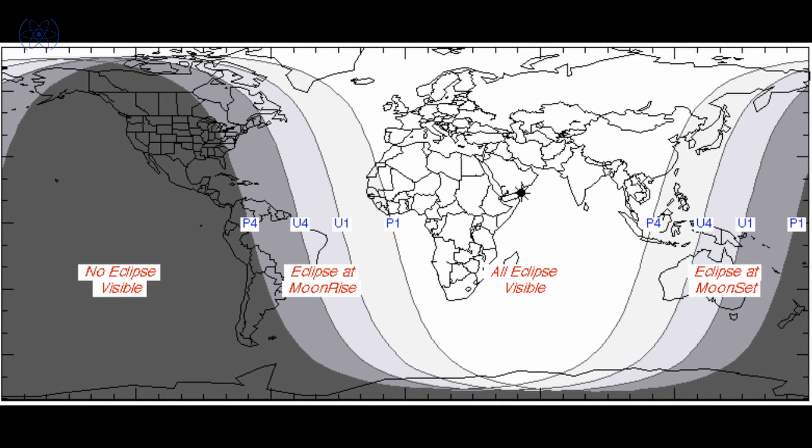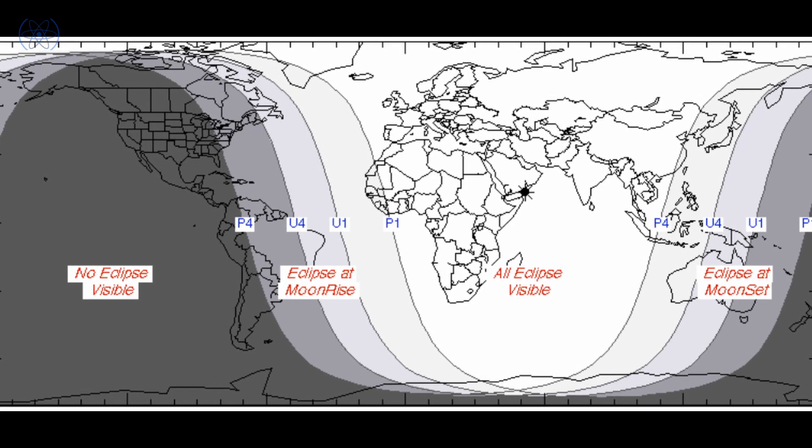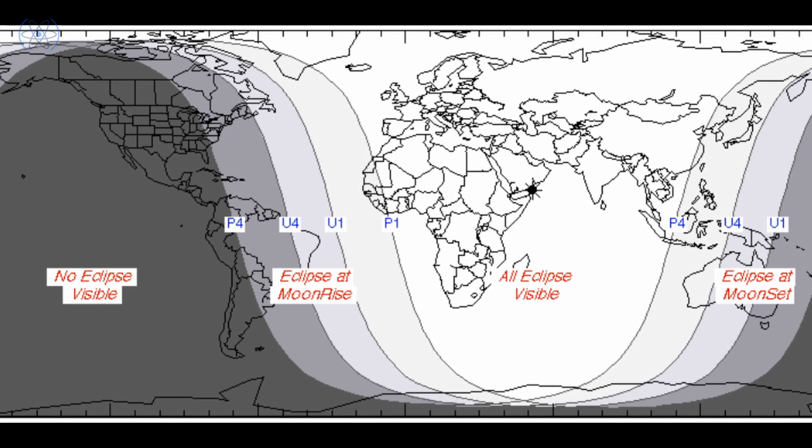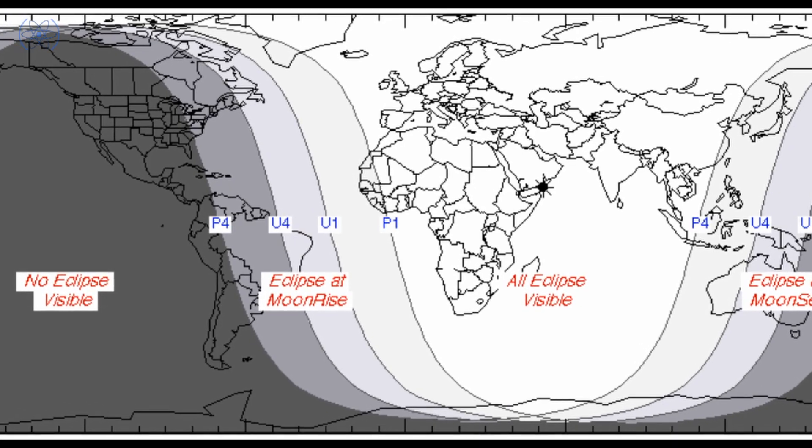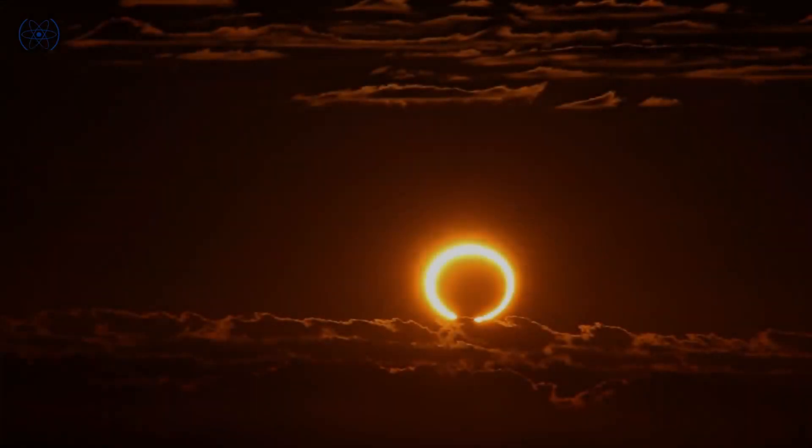The eclipse may be visible in Europe, Asia, Africa, Western Australia, and the Eastern Americas. Until next time.